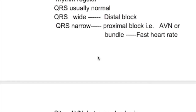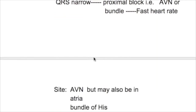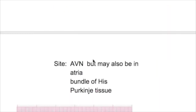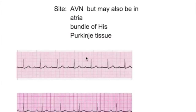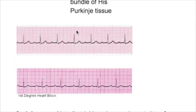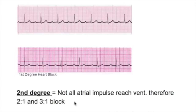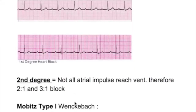The heart rate is fast in the case of a narrow QRS. The site of block in first degree is usually in the AV node, but it may also occur in the atria, bundle of His, and the Purkinje tissues.